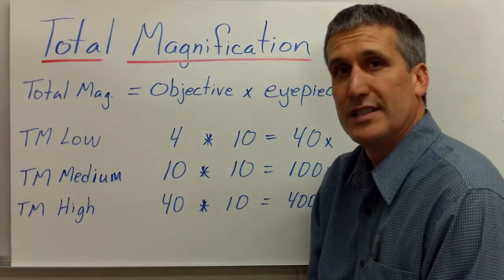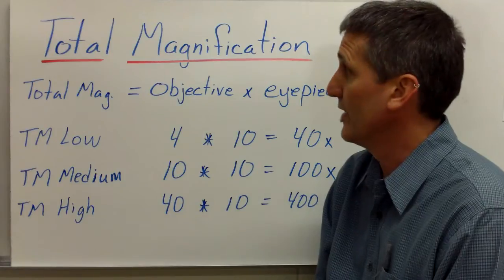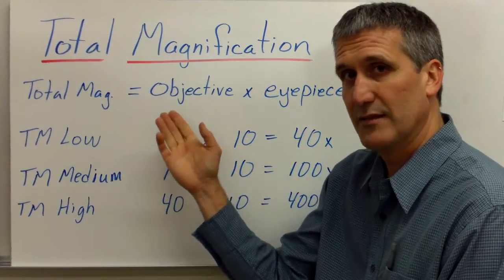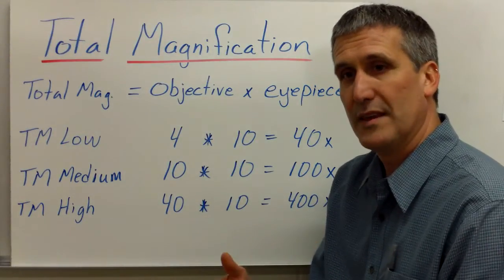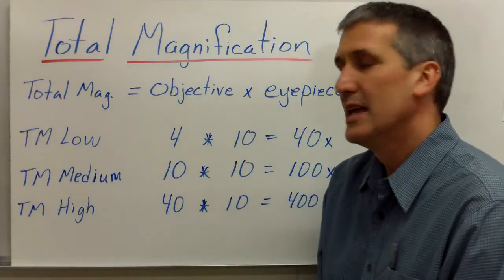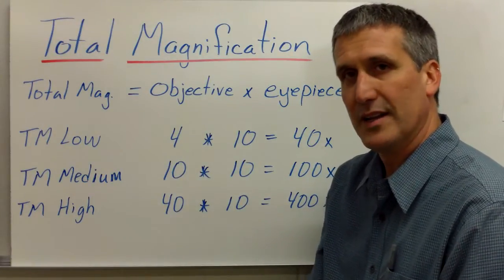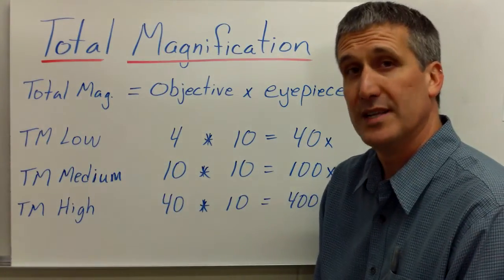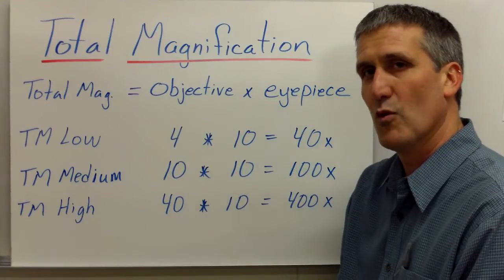The next thing you want to understand is, how do you calculate the total magnification of the compound light microscope? Total magnification equals the objective lens times the eyepiece magnifying power. You multiply them together because the image is being compounded twice. So, let's look at what the total magnification under the low power objective would be 4 times 10, and that would give you a total magnification of 40x.